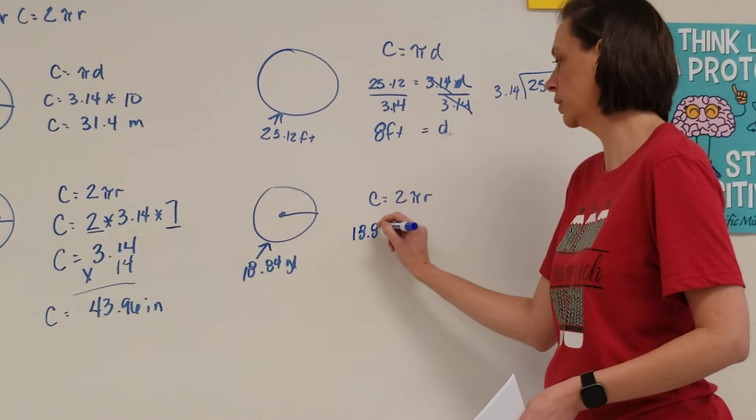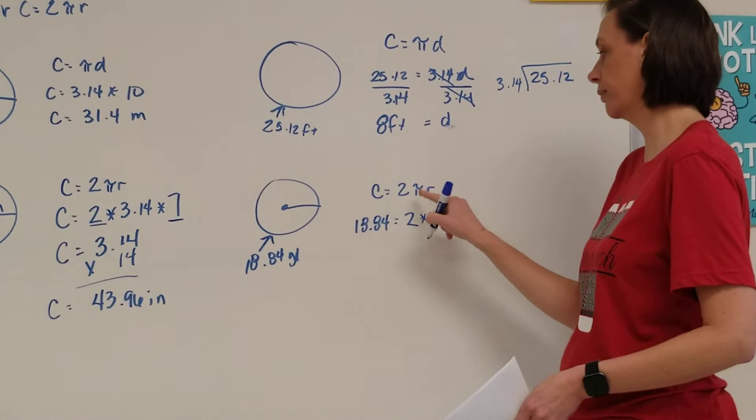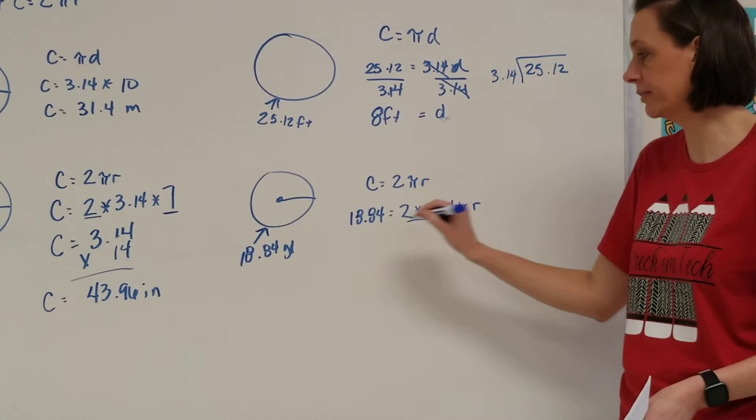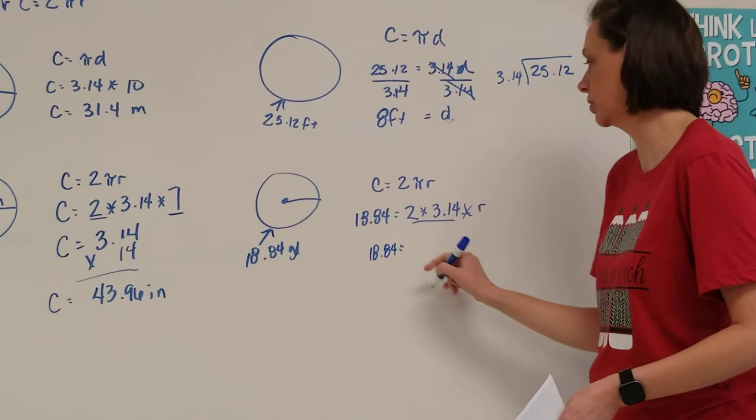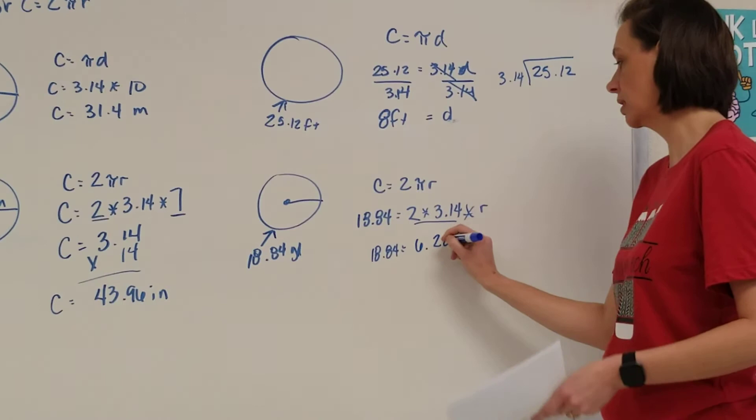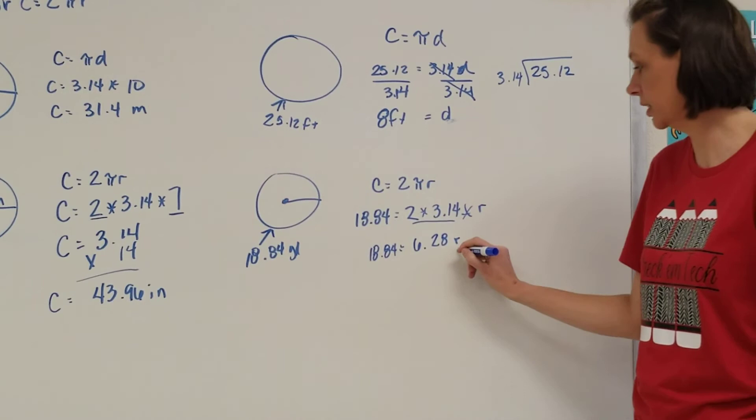I need this 2 times 3.14 for pi times radius. So this time, I'm going to simplify this first. If I have 18.84 equals 2 times 3.14, which is 6.28 r. I keep that r. Now this time, I still want r by itself. So I'm still going to divide, because it's the opposite of multiply here, by 6.28.